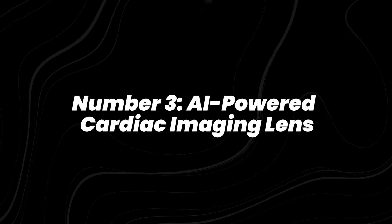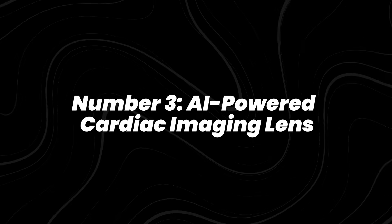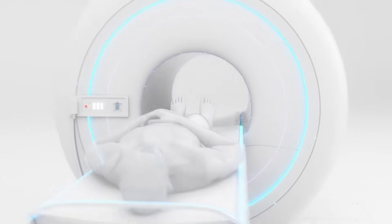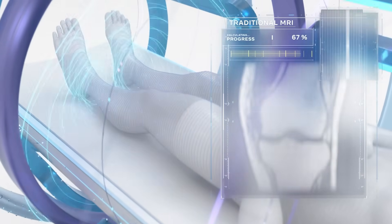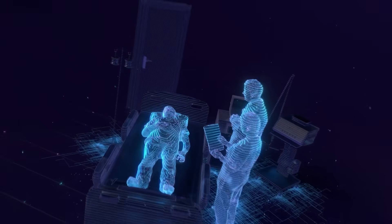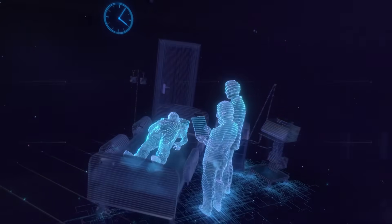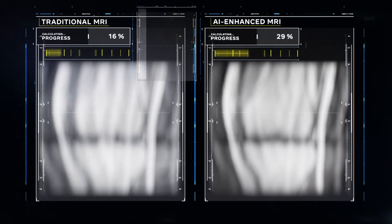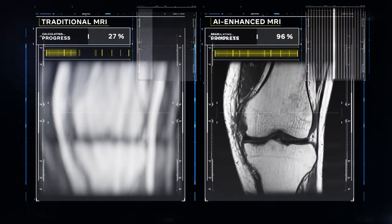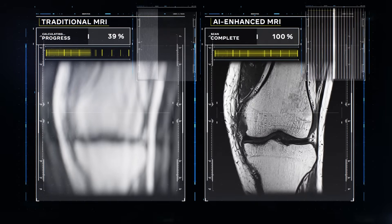Number 3, AI-Powered Cardiac Imaging Lens. In hospitals, a new AI-assisted device is helping doctors see heart disease before symptoms even start. Developed by researchers at Stanford and Mayo Clinic, this miniature camera lens is inserted via catheter and guided by AI to detect plaque buildup inside coronary arteries.